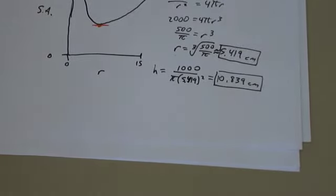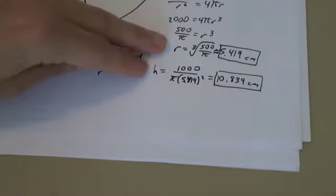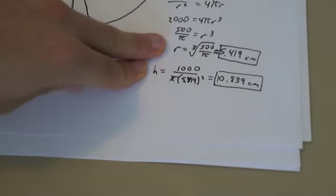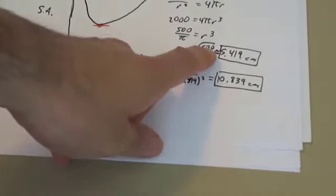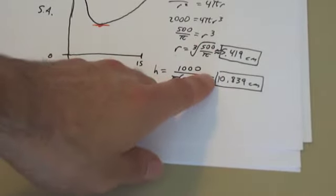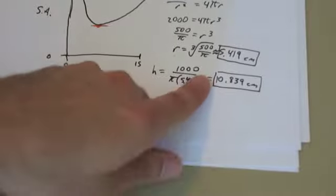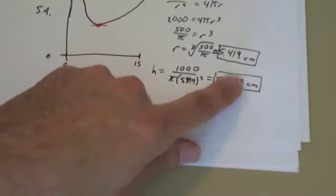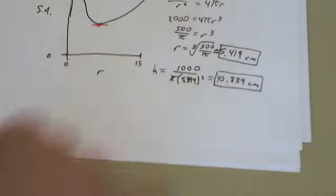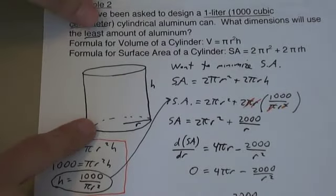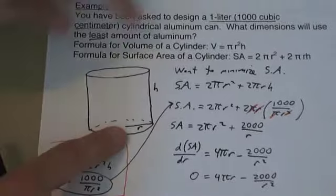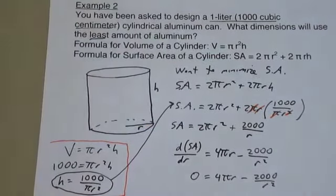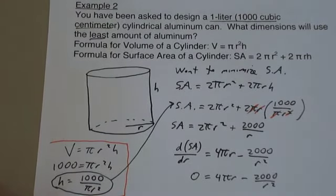We've answered the question. The dimensions that use the least amount of aluminum are radius = 5.419 centimeters and height = 10.839 centimeters. What's pretty cool about this is that the height is actually exactly double the radius. So the most efficient can — using the least amount of material — has a height about double the radius, which matches the picture drawn earlier.